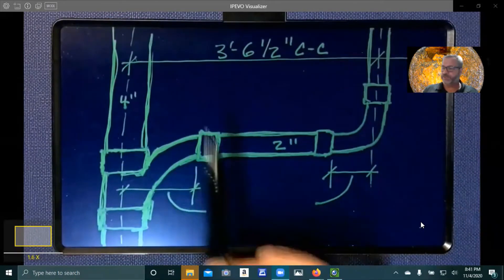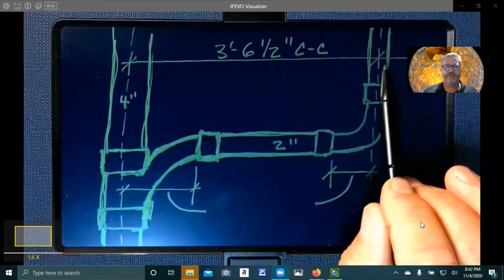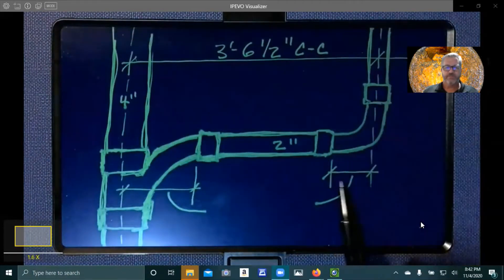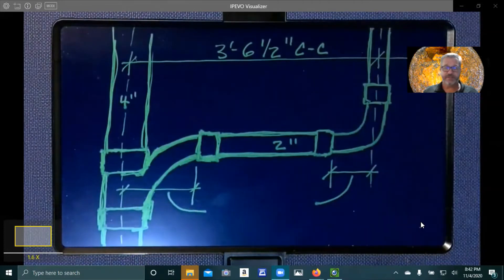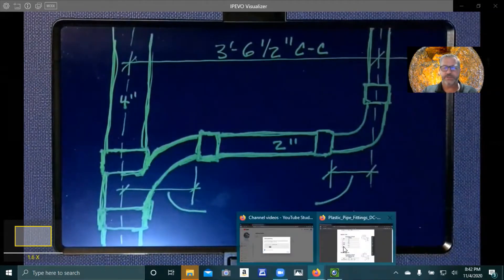So I went ahead and measured out three foot six and a half center to center. I went ahead and did a couple little pre measurements here to show you what we're going to be taking off on the fitting side of things. So we go to page 31. Let's go ahead and do that. Let's go to page 31. I already have it set up here.